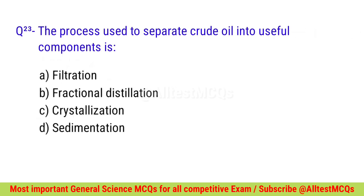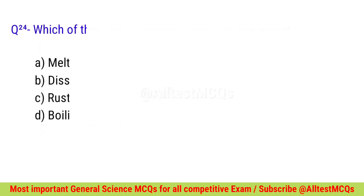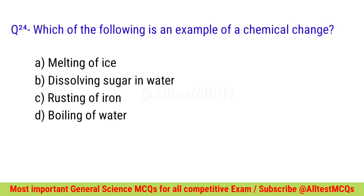Question number twenty-three: The process used to separate crude oil into useful components is? Correct option is B — Fractional distillation. Question number twenty-four: Which of the following is an example of a chemical change? Correct option is C — Rusting of iron.